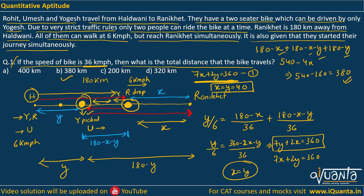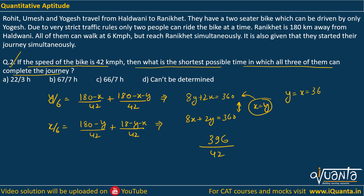The total distance covered by bike: first leg = 180 − x = 144, return leg = 180 − x − y = 108, final leg = 180 − y = 144. Total = 144 + 108 + 144 = 396 km. Time = 396 / 42 = 66/7 hours. So option C is the correct answer for question two.